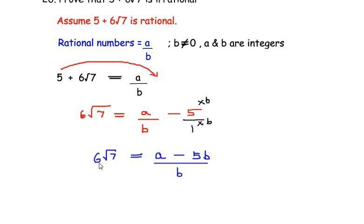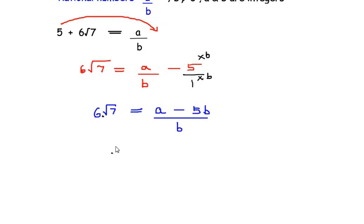Next we are going to take this 6 that was multiplied with root 7 on the other side of the equal to sign. So it goes to the denominator and we are going to write: square root of 7 is equal to a minus 5b over 6b.